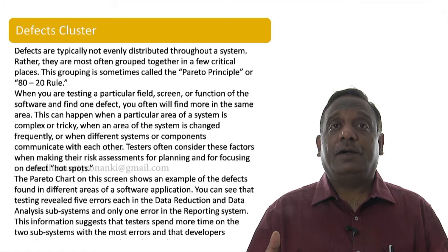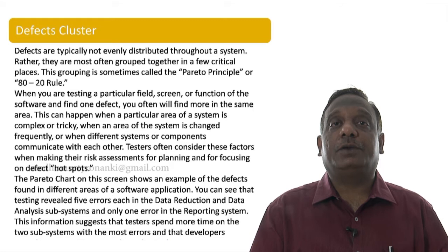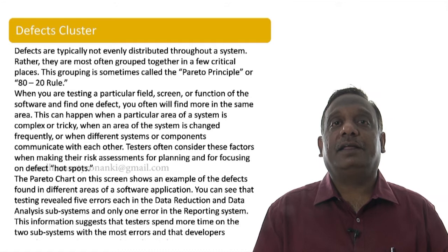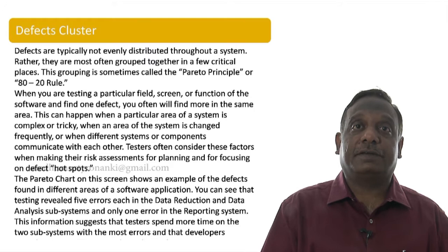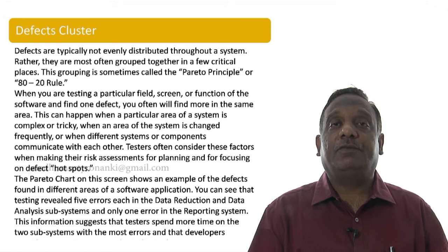The Pareto rule was not originally hypothesized for software testing. Pareto was a Latin sociologist who studied how wealth is distributed in Italy. He found that 80 percent of the wealth in Italy was held by 20 percent of the population, and the remaining 20 percent of wealth was distributed among 80 percent of the population. He found this very interesting and studied other European countries, finding the same pattern.